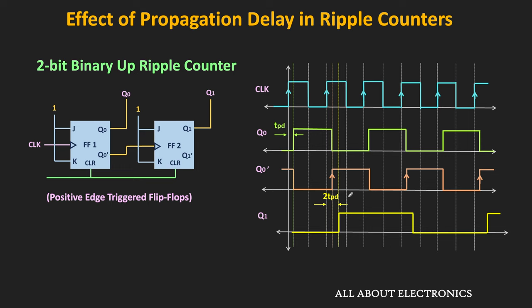With the propagation delay, if we see the output of this 2-bit up counter, it will look like this. Let us assume that the propagation delay of each flip-flop is the same, and let us denote it with TPD. The output of the first flip-flop, Q0, will respond to the clock transition after the propagation delay TPD. The Q0-bar output is exactly opposite to Q0, so the second flip-flop will respond to the rising edge of Q0-bar after its own TPD, meaning with respect to the clock edge, it changes after 2 times TPD.